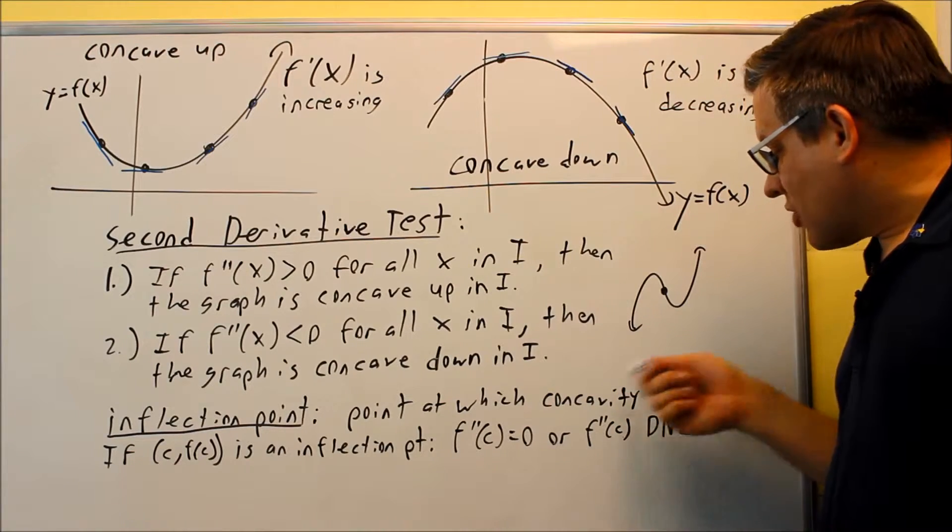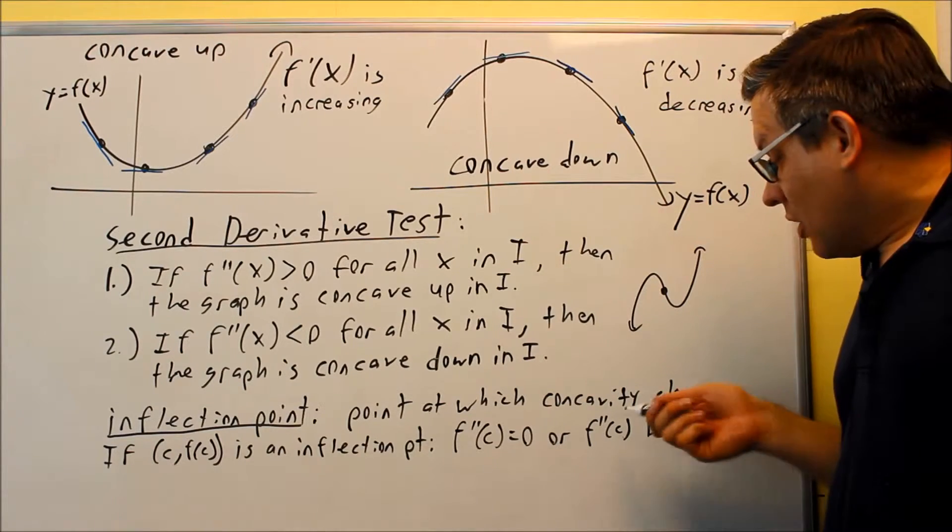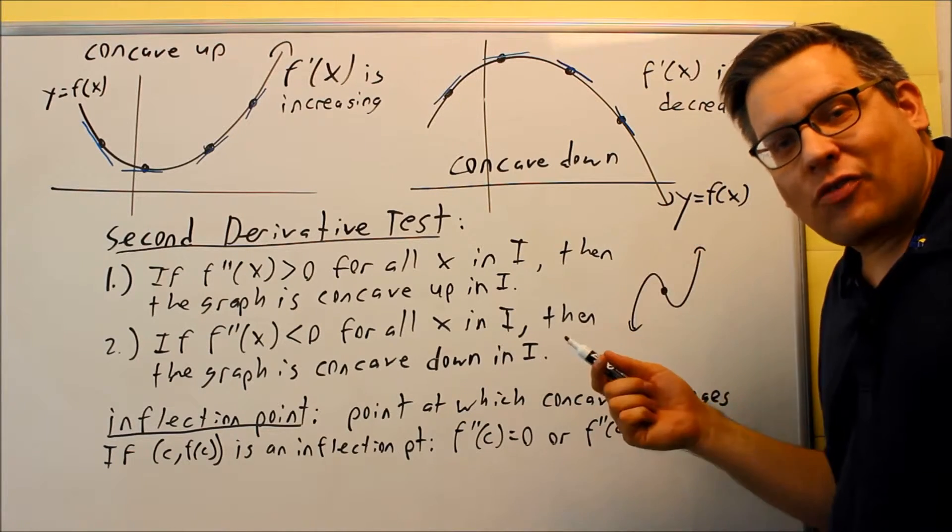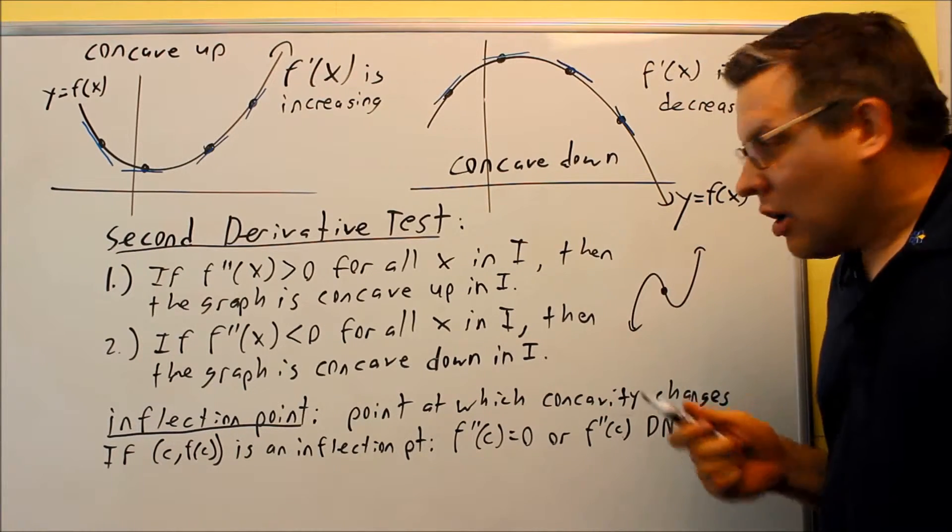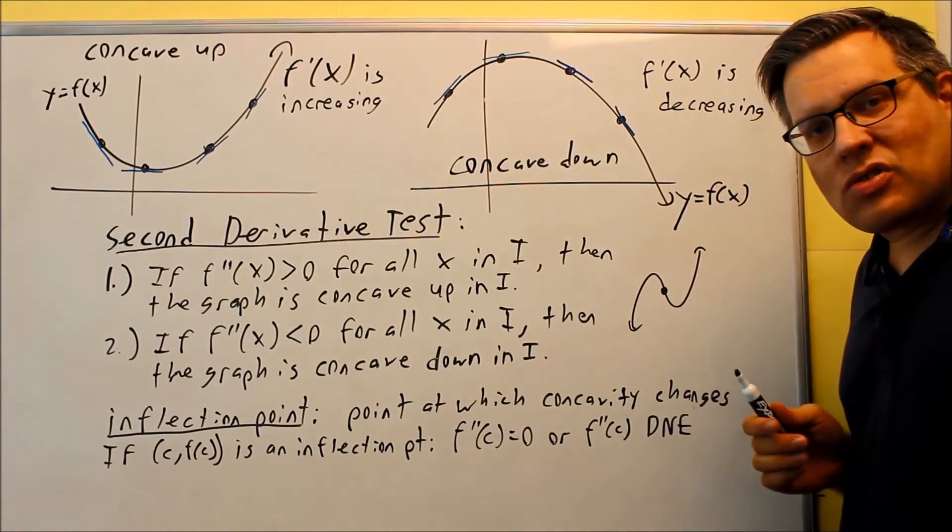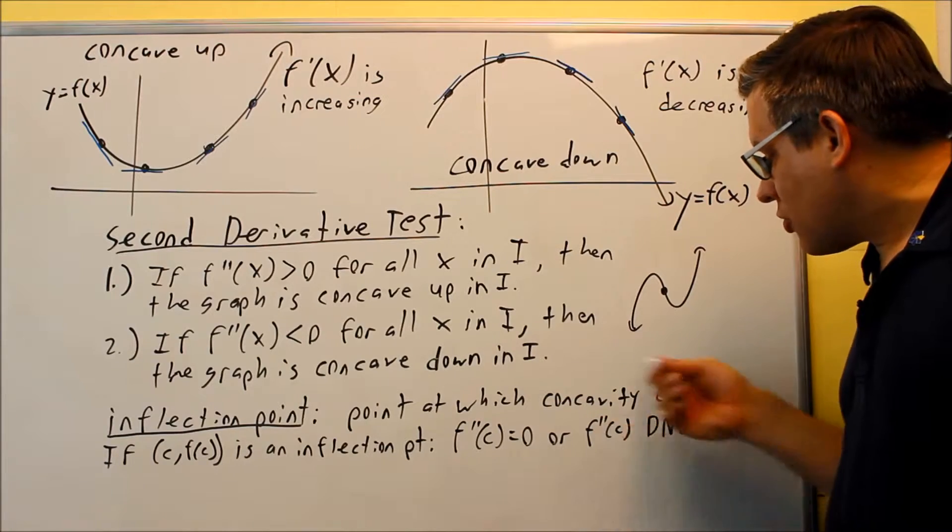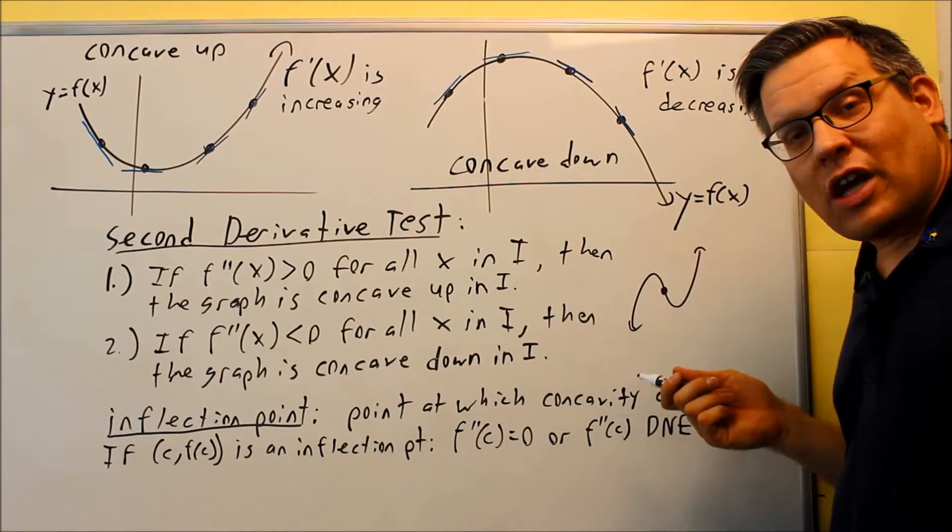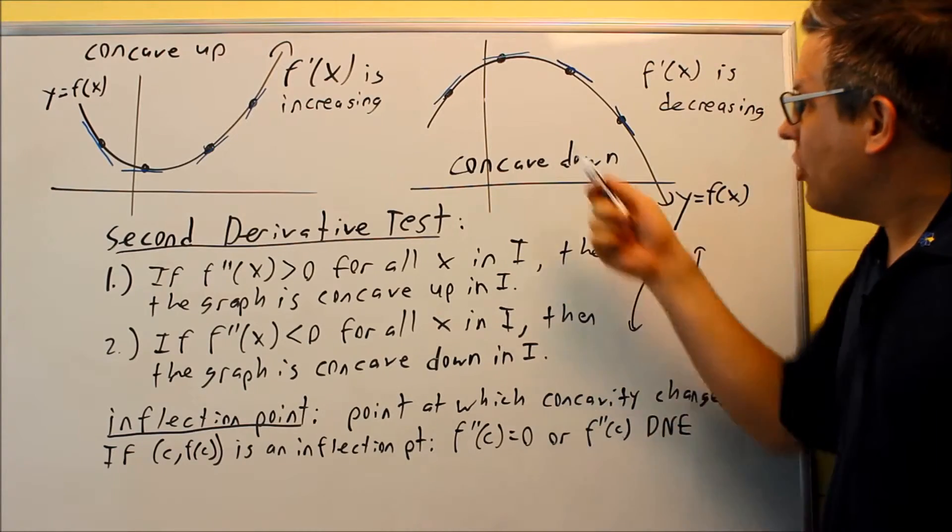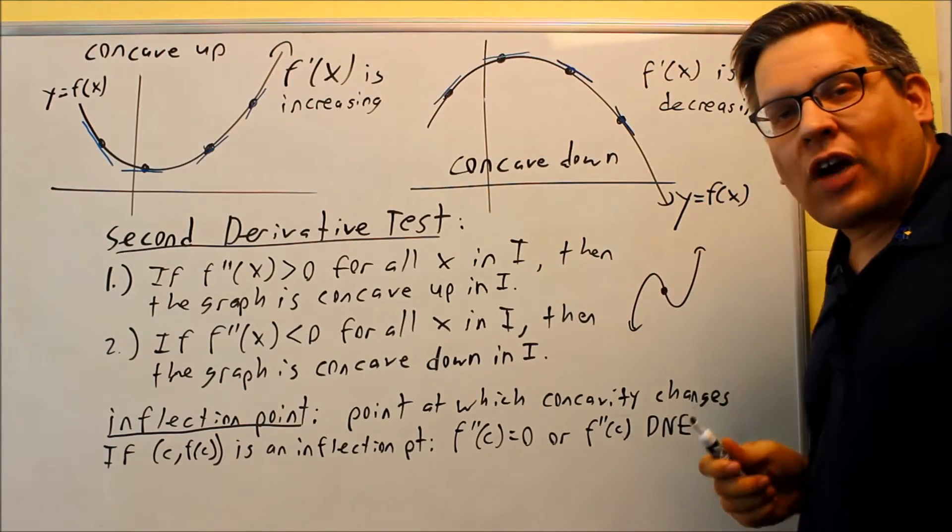So remember that for this situation here, if you put c in there and it's undefined in the second derivative, then it has to be defined on the original one. Otherwise if it's not on the graph itself, that means it doesn't exist at all and it's not actually going to be an inflection point. So this holds true here, second derivative at c does not exist or undefined, but it still has to be defined on the original f(x) graph that you have.